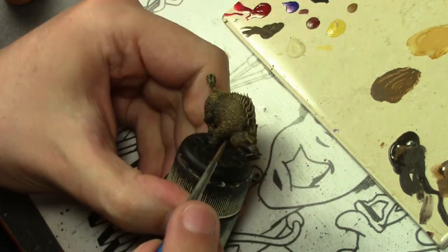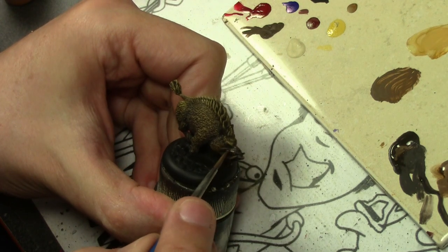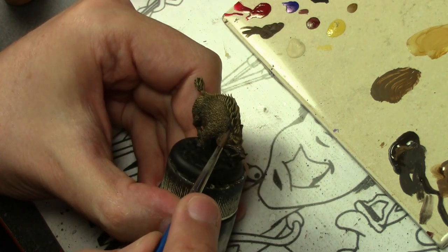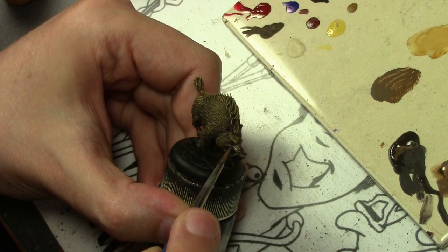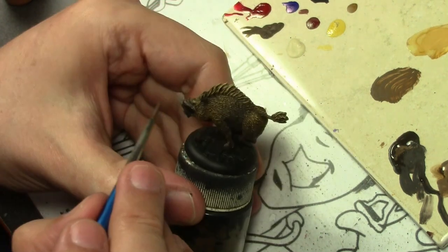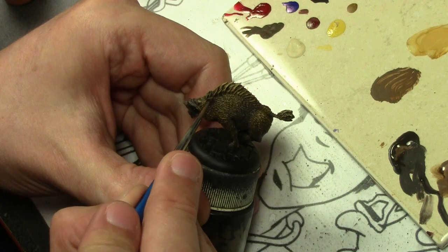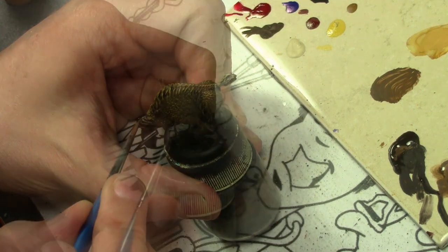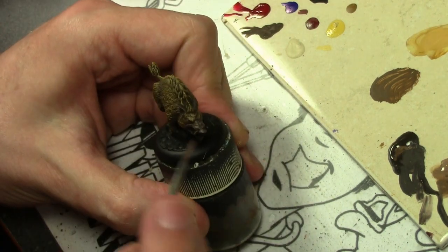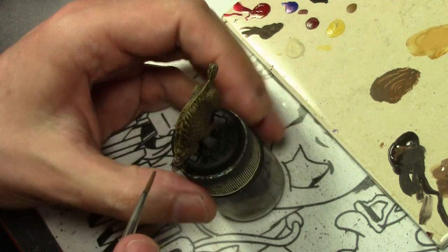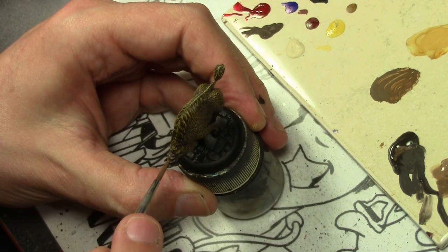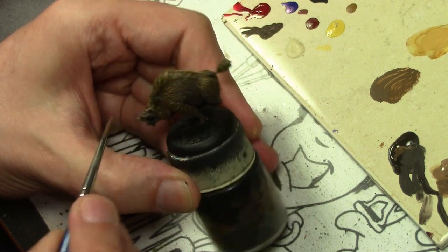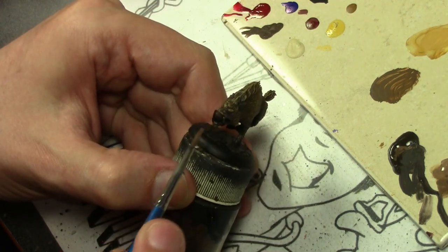For the base coat we are using a tri-mix of Camo Black Brown, Flat Earth, and Model Color Beige Red. Camo Black Brown is to bring it up from the shade, the Flat Earth is to give it some of the color we used on the fur, and the Beige Red is to give it a bit more of a fleshy pig-like color. We continue to add more and more Beige Red to that previous mix for each additional highlight, layering now and not dry brushing, until we get to just straight Beige Red towards the tip of the nose.